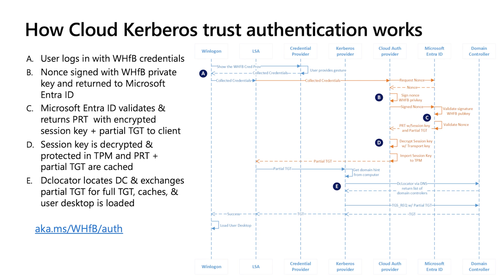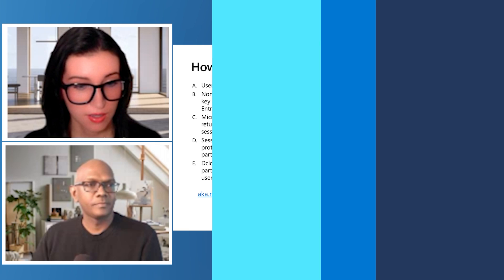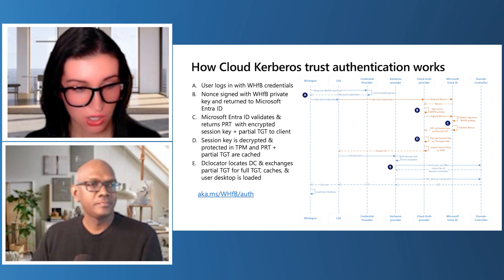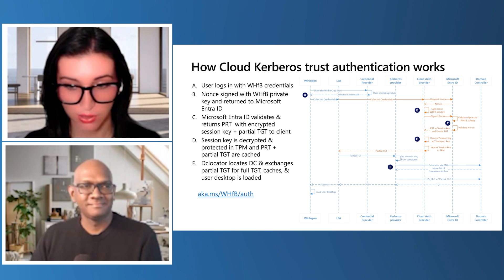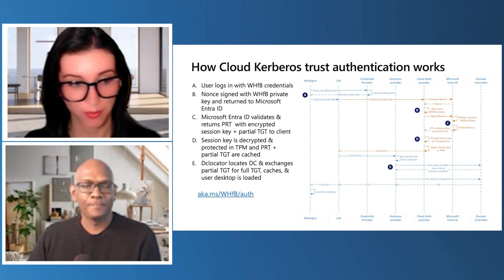That flow covers the case where the device is Microsoft Entra Hybrid Joined. If you're on a Microsoft Entra Joined device, you won't go through the process to get the TGT until the user actually tries to access an on-prem resource — so roughly at that orange line is where that process stops. Now I'll hand it off to Meryl to talk through some of the prerequisites and go into a demo.